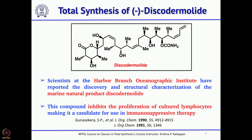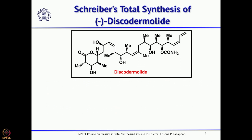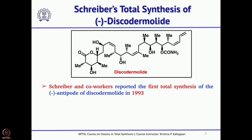Since its isolation, many groups were interested in the total synthesis of this particular complex natural product. The first total synthesis was reported by none other than Stuart Schreiber, who reported this synthesis three years after the molecule was isolated. When you look at this molecule, you can see there are many chiral centers — a six-membered ring on the left-hand side and five chiral centers on the right-hand side.